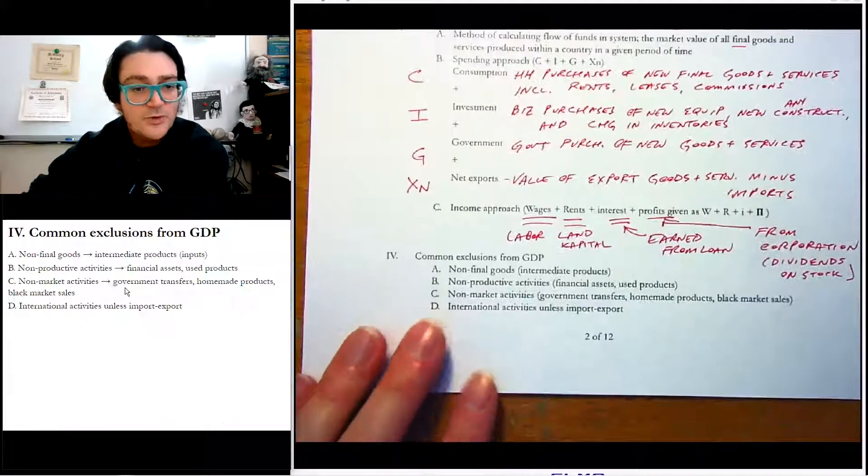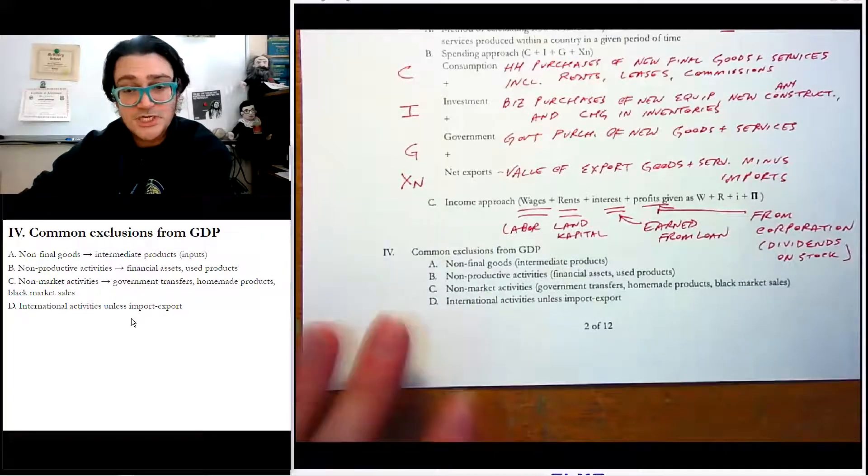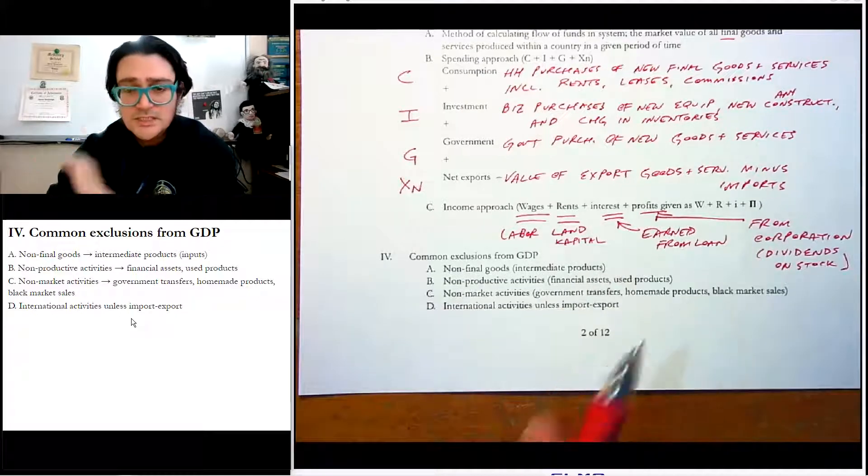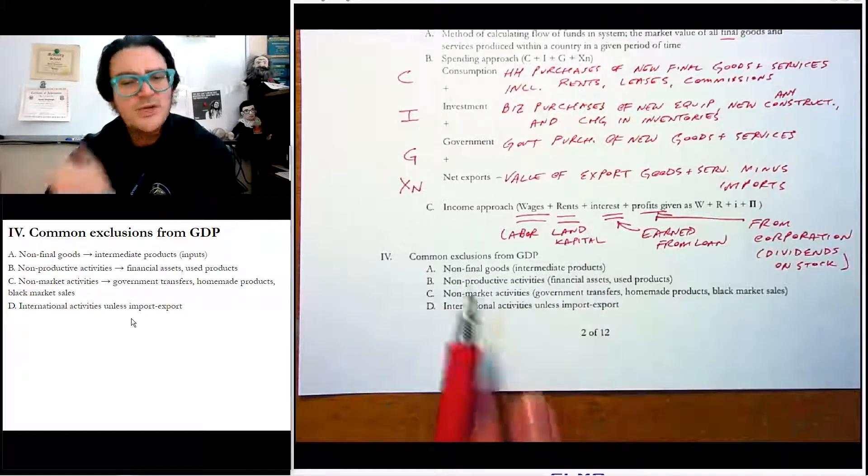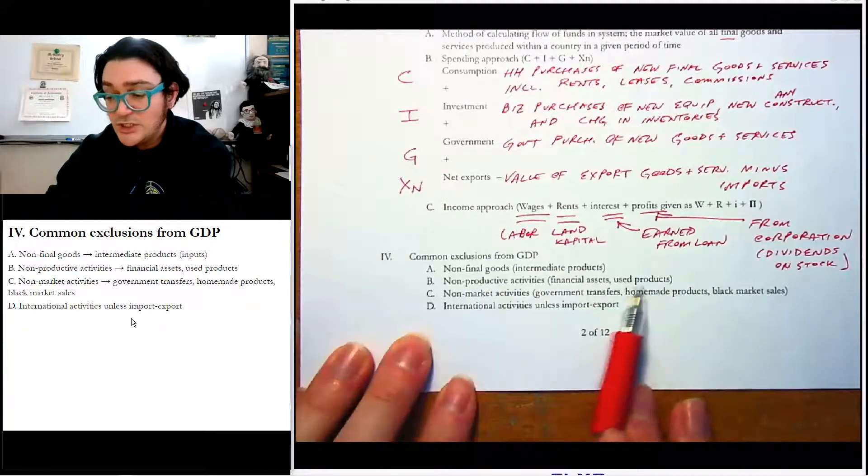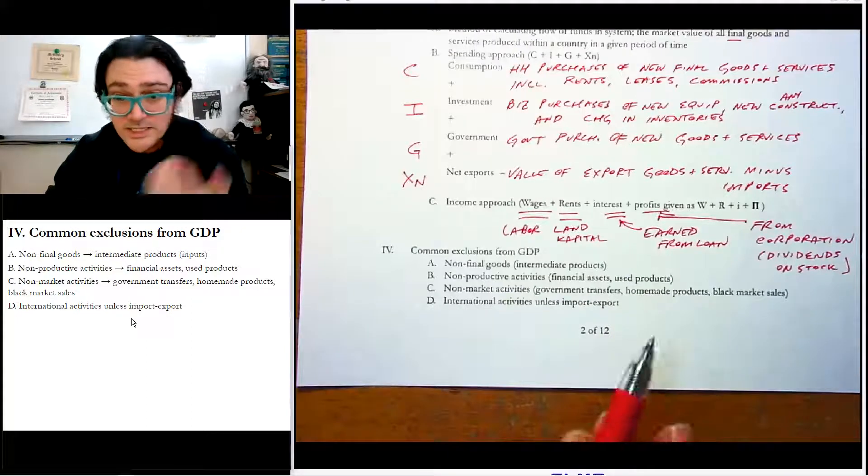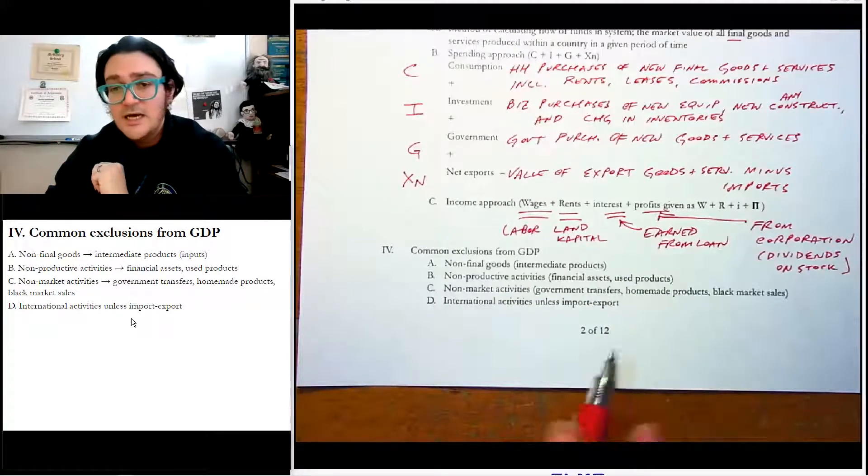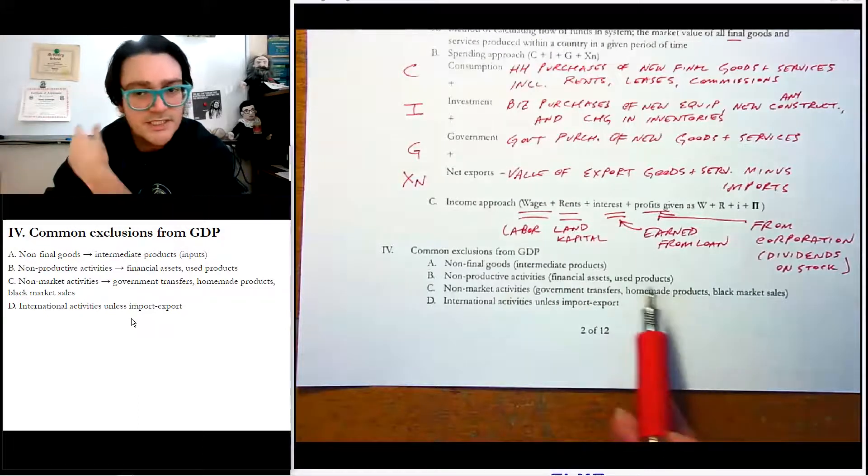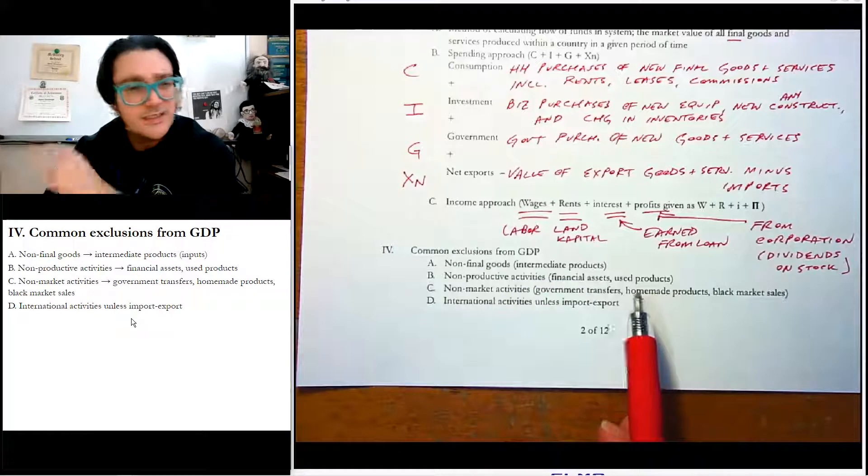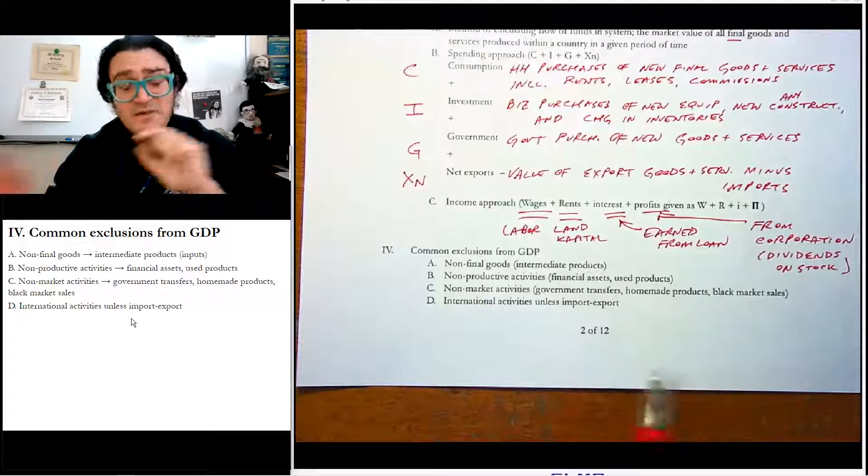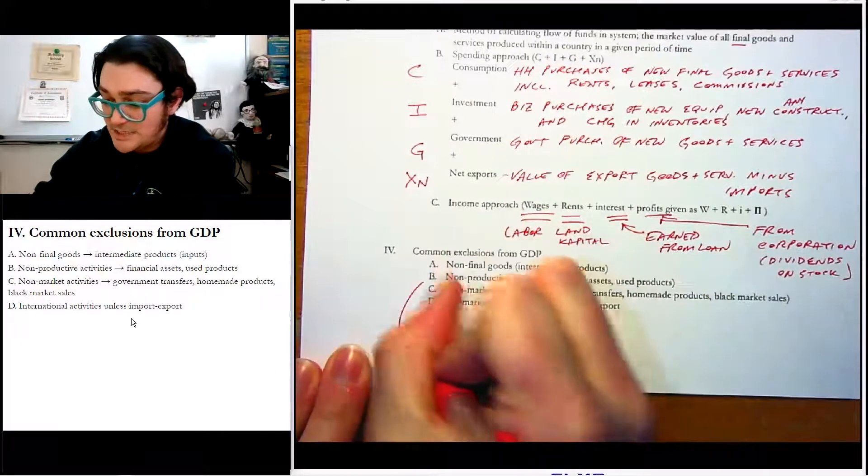Okay, now we're going to wrap up this lecture with four common exclusions from GDP. I have harped on this one numerous times in this lecture. Intermediate goods are not included. So that's a really tricky one. They're not included. So we call them non-finals. Non-productive activities are also not counted. So used goods are not counted because we've already counted them once. So if it's used, we don't count it. So goodwill doesn't really add a whole lot of economic activity to our economy, garage sales, yard sales. They don't add any GDP in the sense of economic activity.